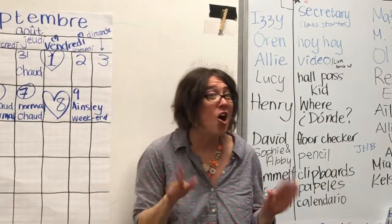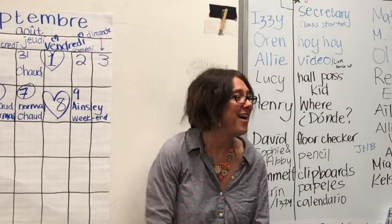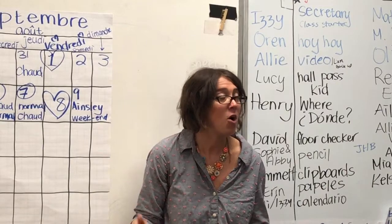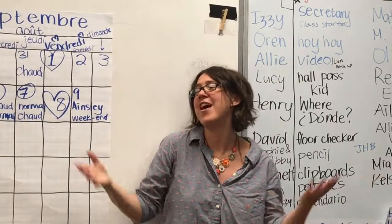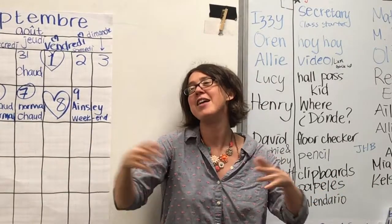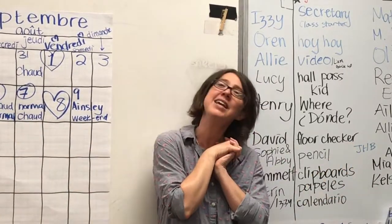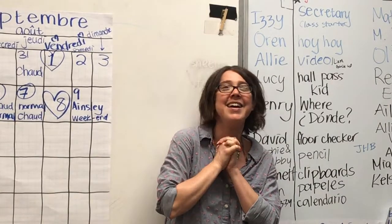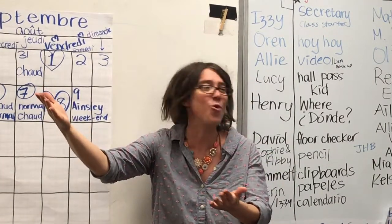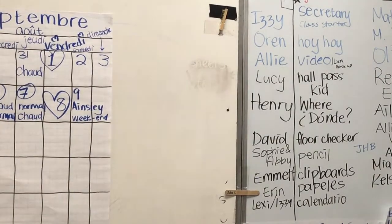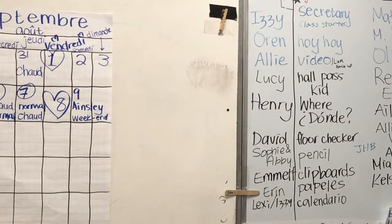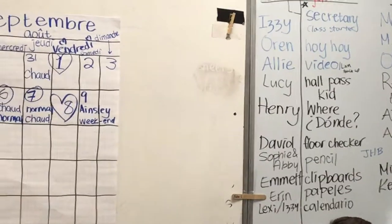Classe! On va chanter à Ainsley, ok? Bon anniversaire à toi! 1, 2, 3! Bon anniversaire à toi! Bon anniversaire à toi! Bon anniversaire, cher Ainsley! Bon anniversaire à toi! Classe, applaudissez-moi! Ainsley! Les Jolly Ranchers! What did I ask Ainsley? Jolly Ranchers!